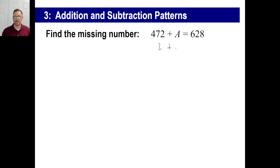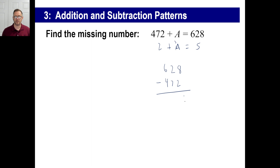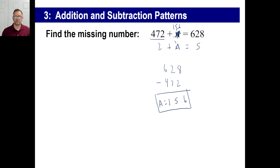You could go: 2 plus A equals 5, and of course you know the answer is 3 — because 2 plus 3 is 5. So you're going to have to take this number and subtract that number to get 3. If that works for that, then do exactly the same thing here — this is really a subtraction problem. 628 minus 472 will give you A. 8 minus 2, then 12 minus 7 is 5, then 5 minus 4 gives you the answer 156. We say A equals 156 — check it: is 472 plus 156 the same thing as 628? Yes.